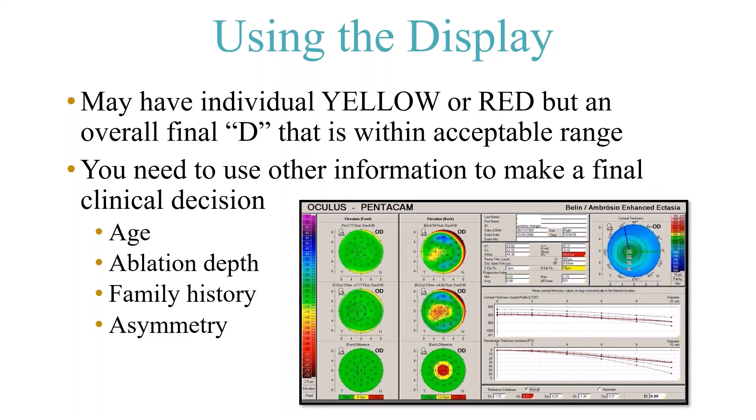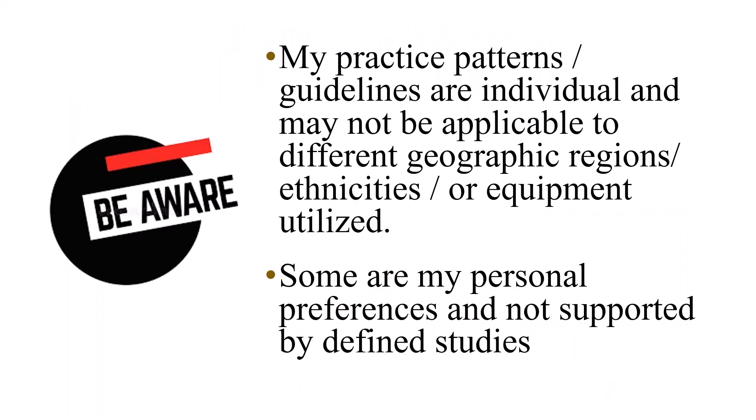You may have individual yellow or red D-values but an overall final D within the acceptable range. In that case, use other information for the final clinical decision: the patient's age, ablation depth, family history, and asymmetry. If one eye is abnormal and the other is normal, the answer to 'can I do refractive surgery on one eye?' should be no — you don't have an abnormal eye, you have an abnormal patient.